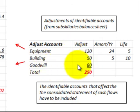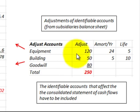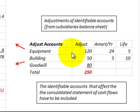For goodwill, it is not amortized and would not be included in the statement of cash flows. But there are other accounts — I'm just using equipment and building as examples — that have to be included in this consolidated statement of cash flows.